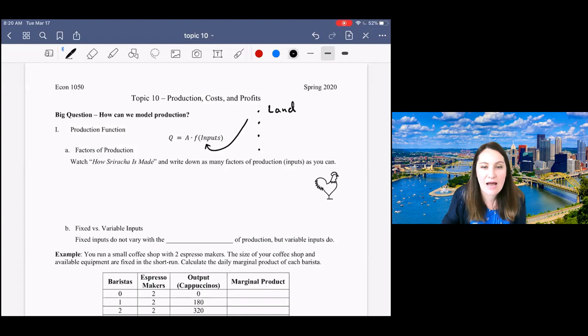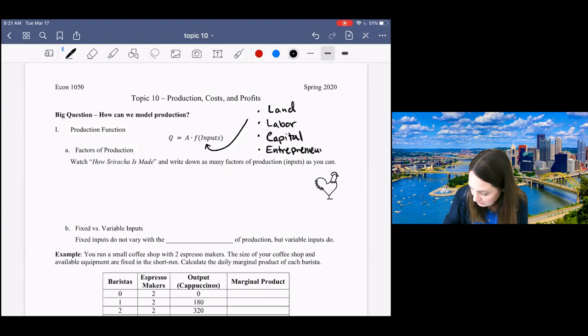Those categories are land and natural resources, labor—that's workers, capital—everything from factories to computers to money, and then the last one is entrepreneurship. It's basically just the skills of workers, their drive, their innovation, all of those things that keep a business moving forward. So we want to think more carefully about these different types of inputs.